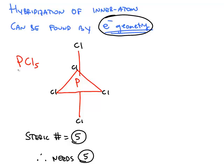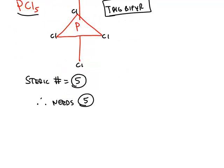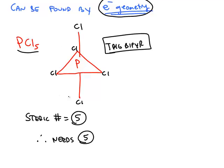For example, in phosphorous pentachloride, you end up with a trigonal bipyramidal electron geometry, which is also the molecular geometry because there are no lone pairs on the central phosphorous. A trigonal bipyramidal is a steric number of five. There are five regions, five ligands around that central phosphorous.